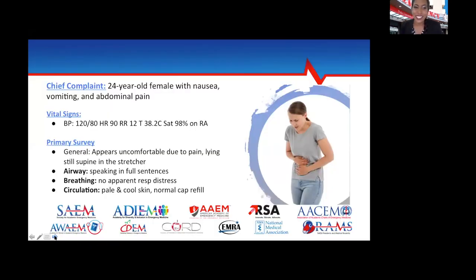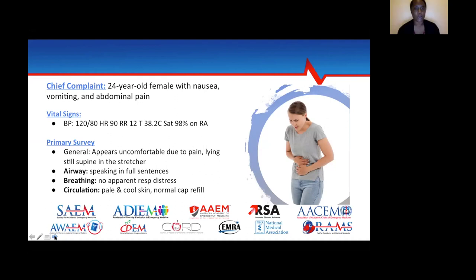Our patient today is a 24-year-old female presenting with nausea, vomiting, and abdominal pain. Looking at the vitals — blood pressure looks okay, heart rate is fine, she's afebrile, and sats are okay. From the primary survey, she looks a little uncomfortable but probably pretty stable.